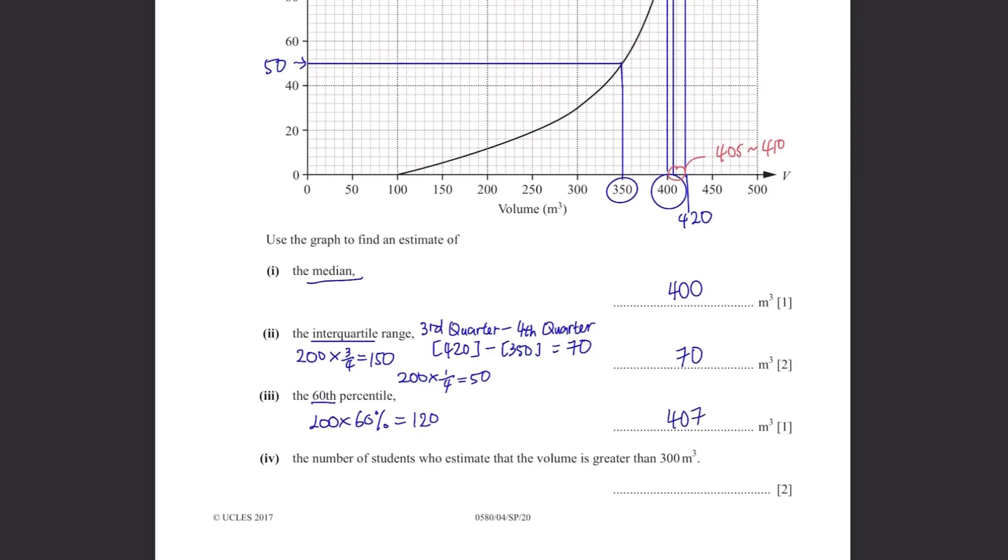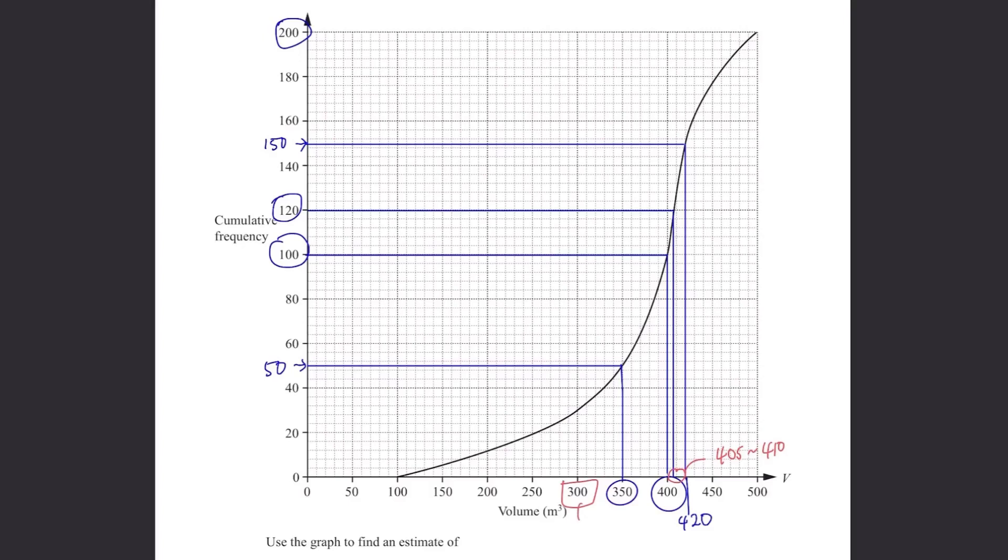The number of students who estimate that the volume is greater than 300 m3. 300 is here. These are the students who estimated the volume to be greater than 300. Since this point is 30, the rest of the students on this side will be 170 from 200 minus 30.